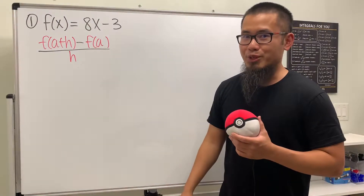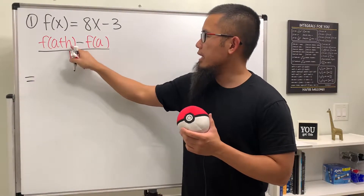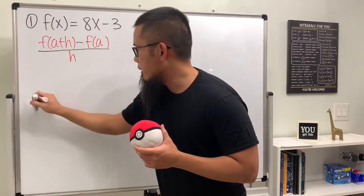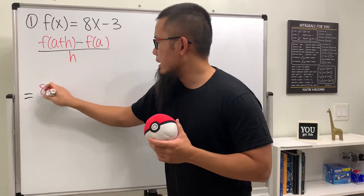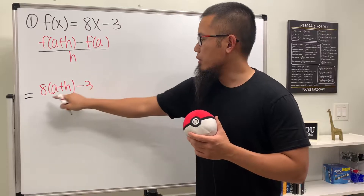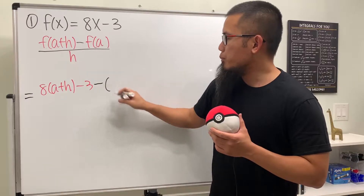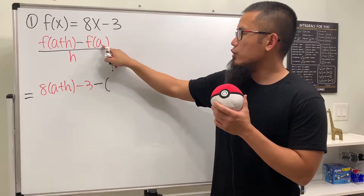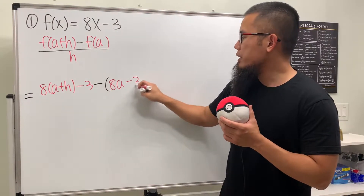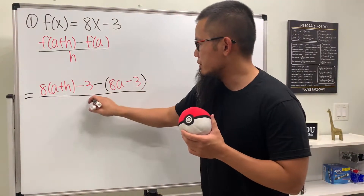For the first problem, we have f(x) = 8x - 3. All we have to do is plug in (a+h) into x. So we have 8 times (a+h) minus 3 for the first part. Then we subtract f(a), which is 8a minus 3, and all of this is divided by h.